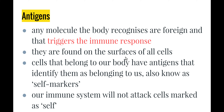Usually our immune system will not attack cells marked as self, in order to keep our body functioning normally. However, if you have an autoimmune disease, that basically means your immune system is continuously attacking your own body cells. A fairly common autoimmune disease is known as rheumatoid arthritis, where the immune system attacks the cells of the joints and leads to swelling, inflammation, and immobilization in the joints. It can be quite painful and quite distressing for people with that disease.